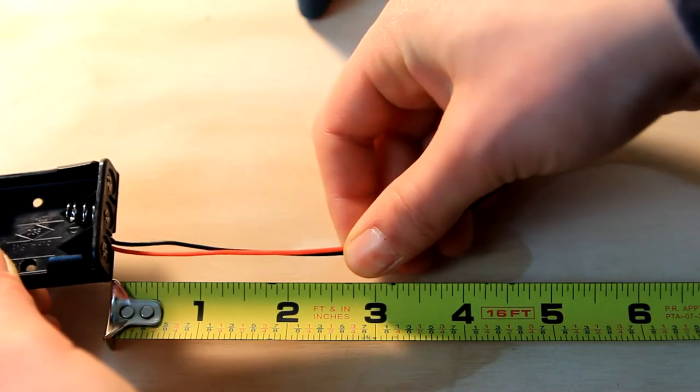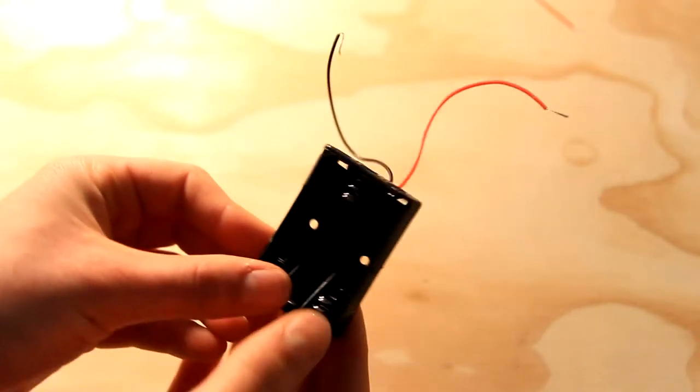Next step, you're going to cut your battery holder wire to around three inches just so you don't have a ton of extra wire hanging around, and you're going to strip those new ends.